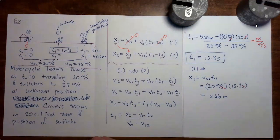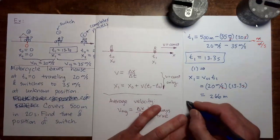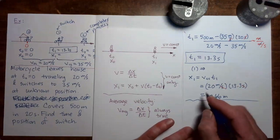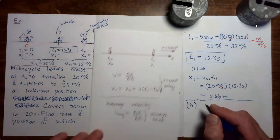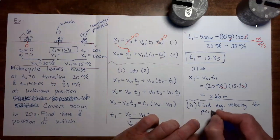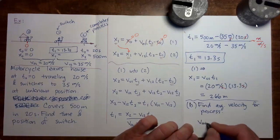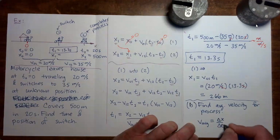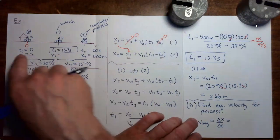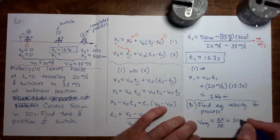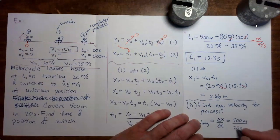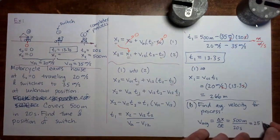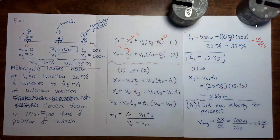Earlier I showed you the formula for average velocity, and I want to squeeze in a little calculation using it. There is a secret part b to the problem: find the average velocity for the entire process. To do that, we use the formula: v_average equals Δx over Δt. The change in position for the entire process is 500 meters minus 0, which is 500 meters. The change in time is 20 seconds minus 0, which is 20 seconds. 500 divided by 20 is 25, and the unit is meters per second.